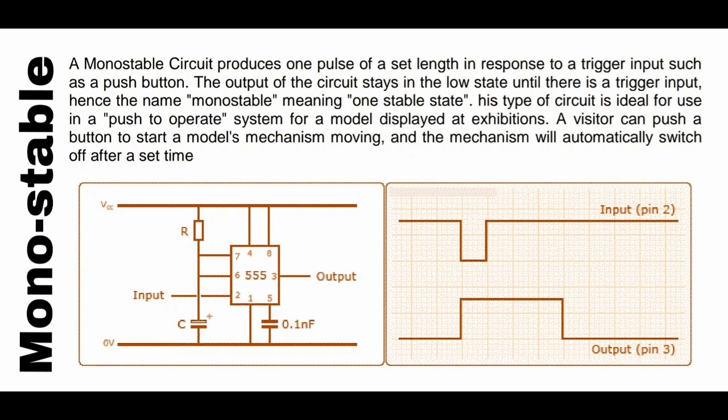A monostable circuit produces one pulse of a set length in response to a trigger input such as a push button. The output stays in the low state until there is a trigger input — hence the name monostable, meaning one stable state. This type of circuit is ideal for a push-to-operate system for a model display at an exhibition: a visitor pushes a button to start a mechanism, and it automatically switches off after a set time.